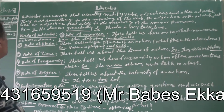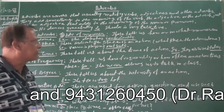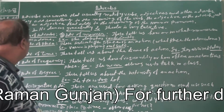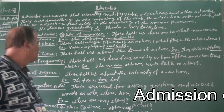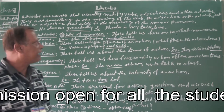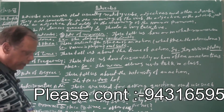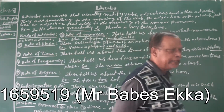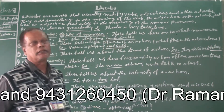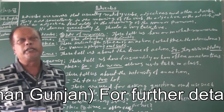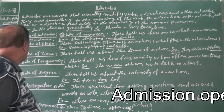Number two: adverb of place. These indicate the place of an action — where the action is done. For example: 'Baroon is playing outside.' The word 'outside' indicates the place where Baroon is playing. So 'outside' is an adverb of place.